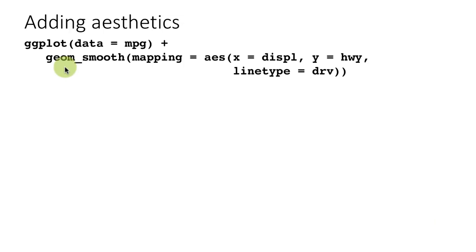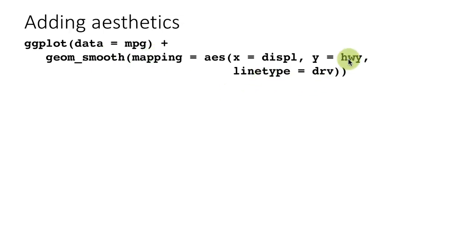You can add additional aesthetics. For example, using geom_smooth with x equals displacement and y equals highway, we can also say line type equals drive. This implicitly divides the data into three sets, because there are three types of drive in the data set: front wheel drive, rear wheel drive, and four wheel drive. It partitions the data into three parts and generates a smooth line for each of them.